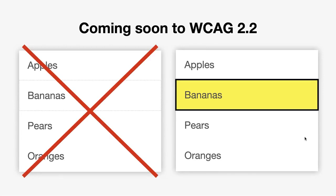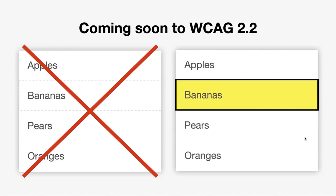But that is about to change. In WCAG 2.2, which is pretty much final draft right now, the current draft indicates specific requirements for what a focus state must look like — something like the faint example on the left would not pass. Specifically, WCAG 2.2 indicates you need a 3 to 1 color contrast between the focus and the non-focus state. And in the part that has that 3 to 1 contrast, it either needs to be a one-pixel border around the whole edge, or four pixels along the shortest edge, or something in between.